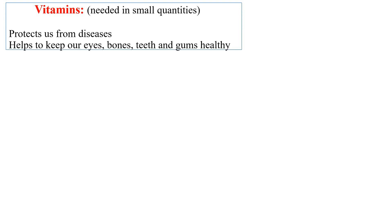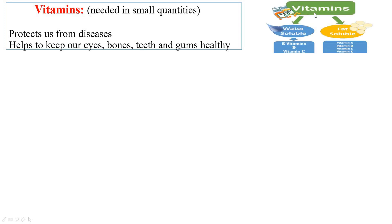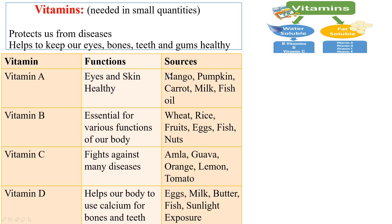Now let's study about vitamins. Vitamins are needed by the body in small quantities. They protect us from diseases and help keep our eyes, bones, teeth, and gums healthy. There are two main types: water-soluble vitamins such as vitamin B and C, and fat-soluble vitamins such as vitamin A, D, E, and K.